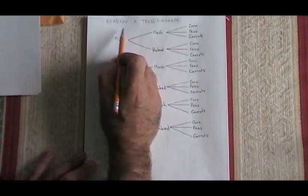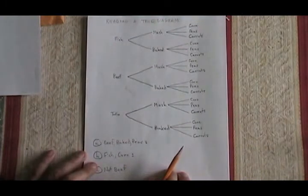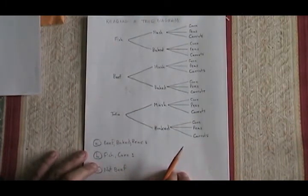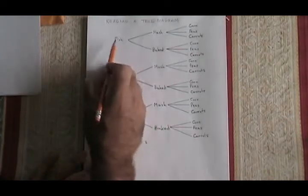This video teaches how to read a tree diagram. This is a tree diagram. It represents the choices that might be made in a cafeteria by a student who has to choose a main dish,